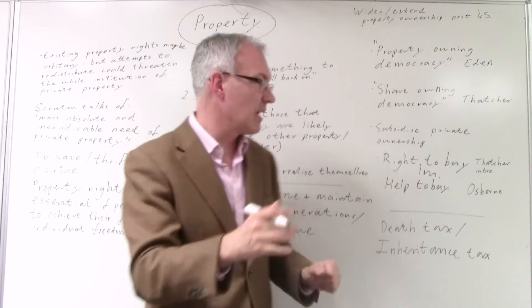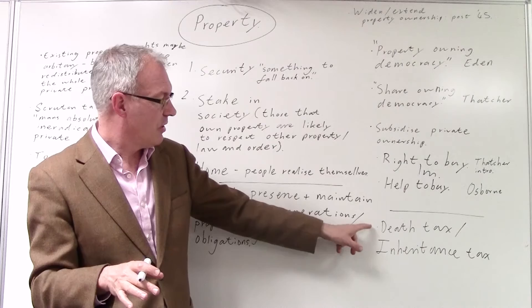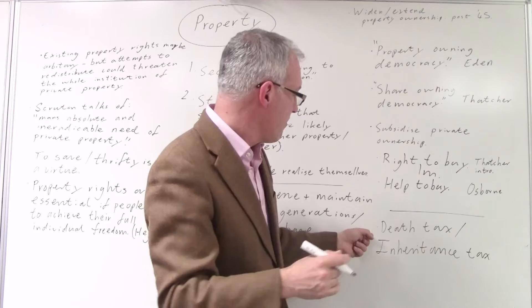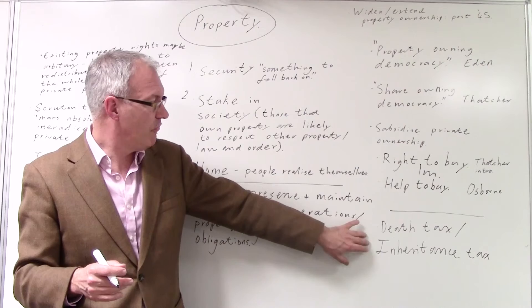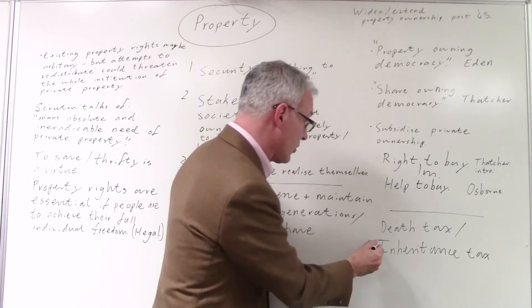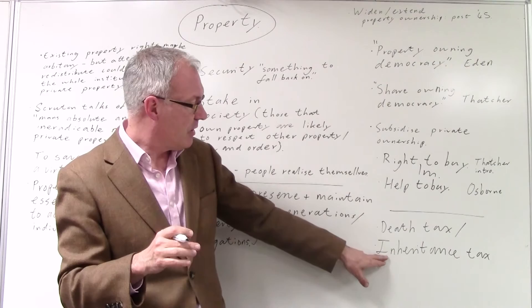So of course, for conservatives, death taxes and inheritance taxes on properties such as those ramped up by Lloyd George in the People's Budget of 1909, or Labour's talk of death taxes in 2015, these are particularly inimical to conservatives. And of course, George Osborne managed to cause a few problems for Gordon Brown by changing the threshold for inheritance tax, for example.